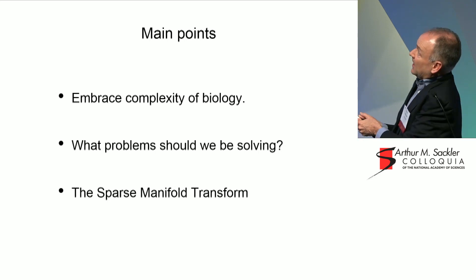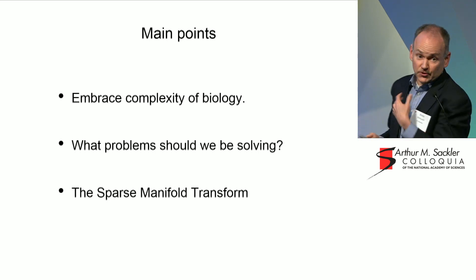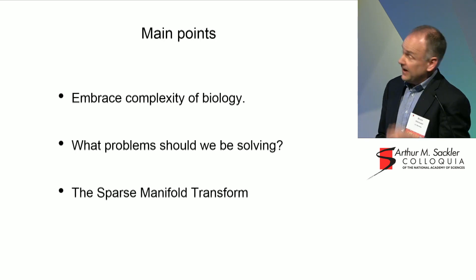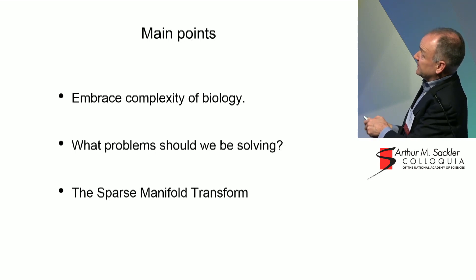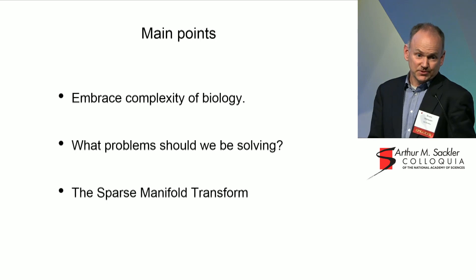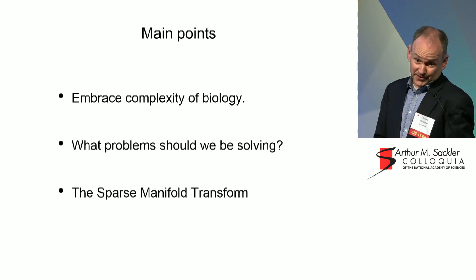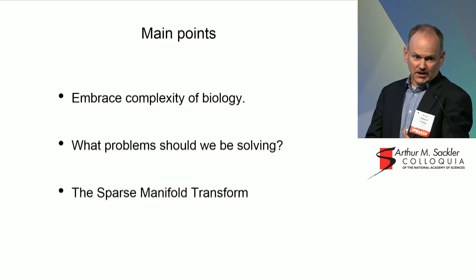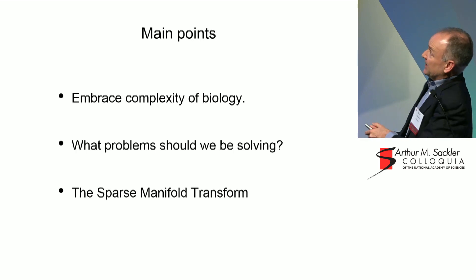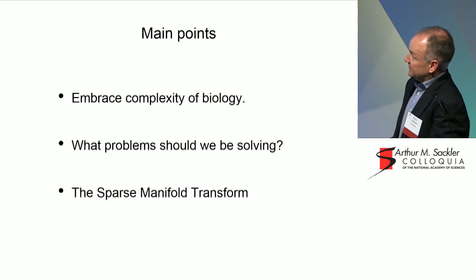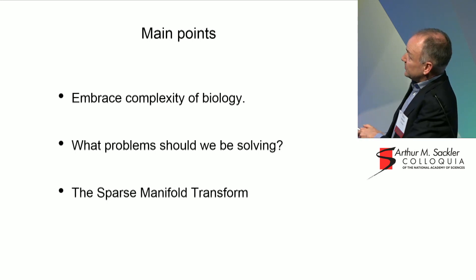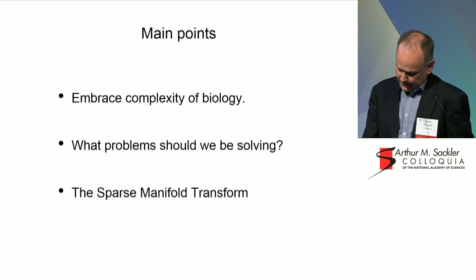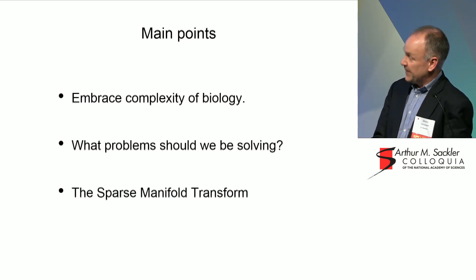If we can embrace many of the complexities and the computational richness we see in biology, I think there's a chance to gain a lot. Also, I think another thing we need to be doing — in terms of neuroscience — is thinking about what kinds of problems we should be solving with these networks, taking guidance from animal behavior, from psychology, and so forth. And that's the way to gain insight. I'm also going to tell you about some more recent work on the sparse manifold transform, which tries to answer this question and fits very well with what Ira told you about flattening of manifolds.